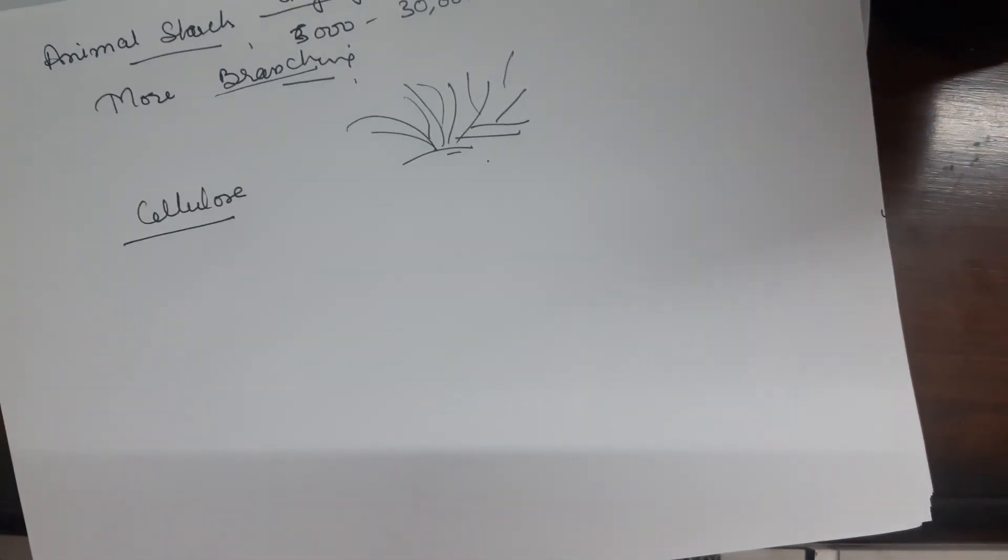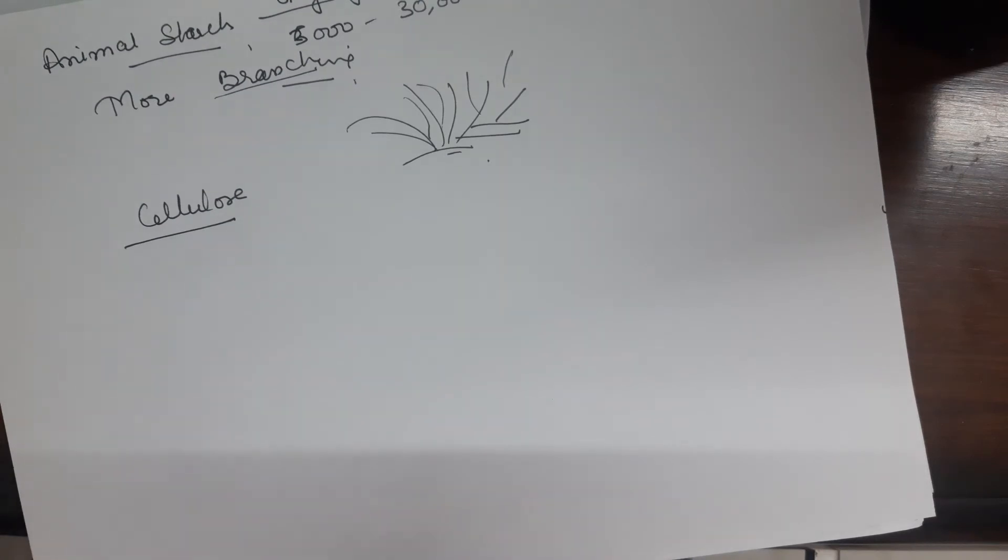Cellulose. Another polysaccharide. And we all know that cell wall of plants are made up of cellulose. And this is the most abundant organic molecule on earth. How is this formed? This is also made up of glucose molecule only. Then, how is this different from starch?